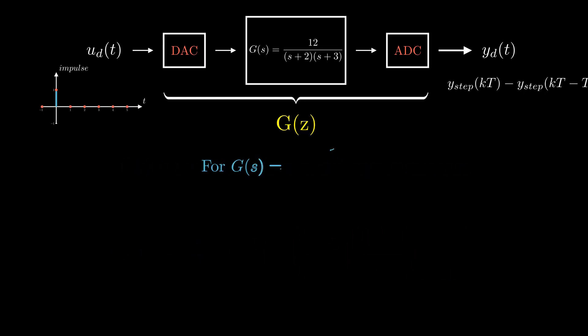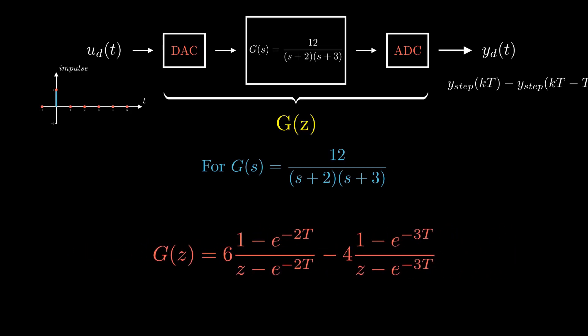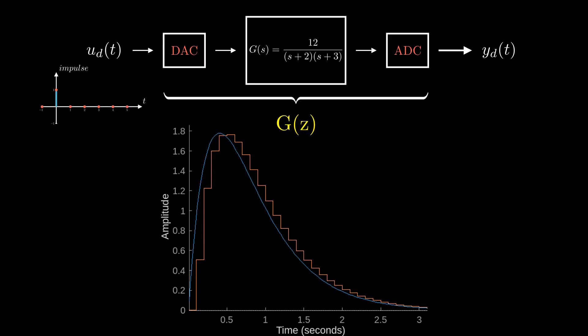For our analog system G(s), if we apply the formula, we can establish a relationship for G(z) as follows. If we choose a sampling period of 0.1 seconds and plot the impulse response of G(s) and G(z), we would obtain a graph as shown.